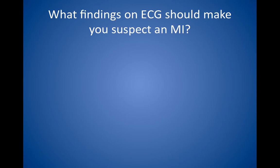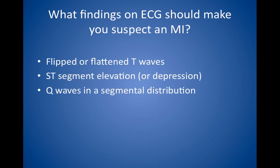What findings on electrocardiograms should make you suspect a myocardial infarction? After a heart attack, ECG would show flipped or flattened T waves, ST segment elevation, and/or Q waves in a segmental distribution. ST segment depression means ischemia. Elevation means injury. Q waves in a segmental distribution means such as leads 2, 3, and AVF for an inferior infarct.